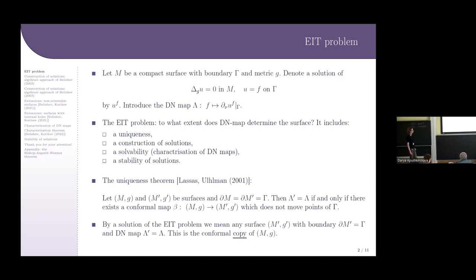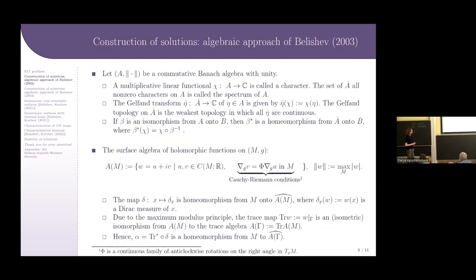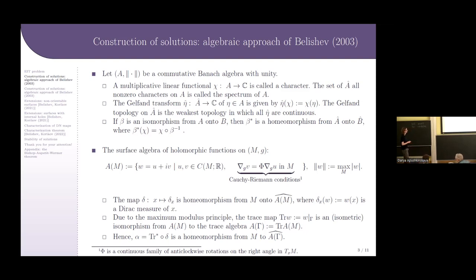The crucial question is which objects can be used as points of a copy. The answer proposed by Mikhail Igorevich Belishev is the following: as points one can use multiplicative linear functionals on a certain commutative algebra A related to the surface. A multiplicative linear functional on an algebra is called a character. The set A-hat of all non-zero characters is called the spectrum of the algebra A.